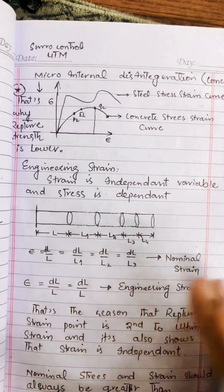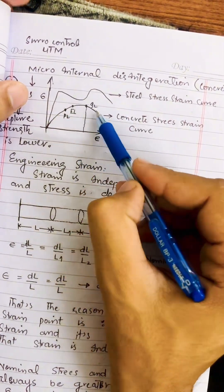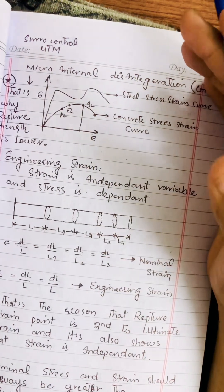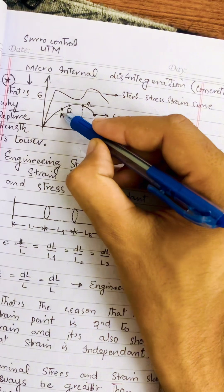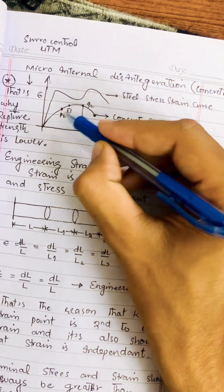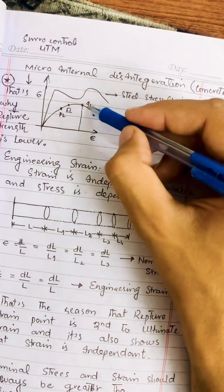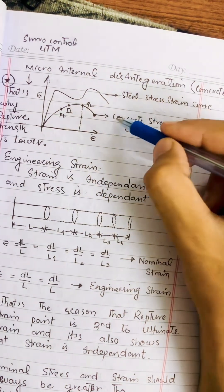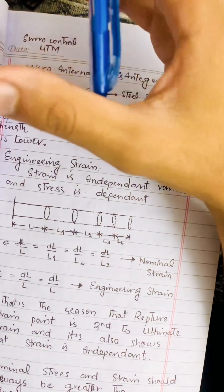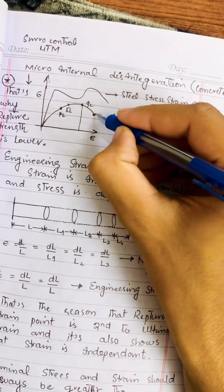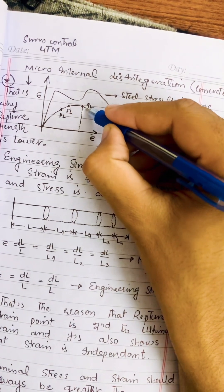Now comparing the stress-strain curve of steel with that of concrete: the concrete curve also has a proportional limit where Hooke's Law applies, an elastic limit, a yield strain, an ultimate stress-strain, and a rupture strain — similar in shape to mild steel but with different material properties.